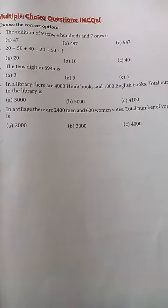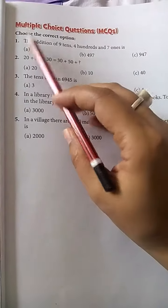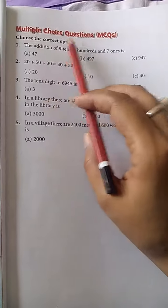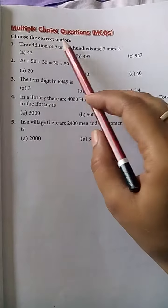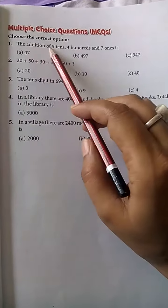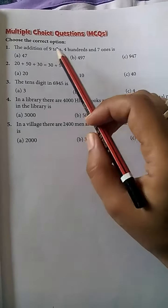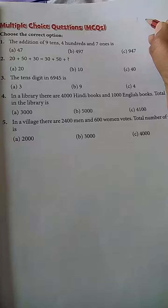Good morning students. In exercise 3.2, the next topic is multiple choice questions. Choose the correct option. Problem 1: The addition of 9 tens, 4 hundred, and 7 ones is? 9 tens means 90.